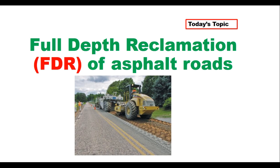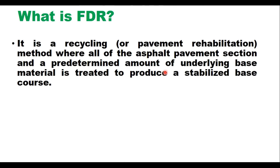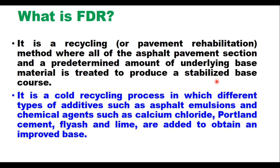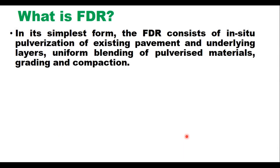FDR is a recycling or pavement rehabilitation method where all of the asphalt pavement section and a predetermined amount of underlying base material like WBM, WMM, or GSB is treated to produce a stabilized base course. It is a cold recycling process in which different types of additives such as asphalt emulsion and chemical agents such as calcium chloride, Portland cement, fly ash, and lime are added to obtain an improved base. In its simplest form, FDR consists of in-situ pulverization of existing pavement and underlying layers, uniform blending of pulverized materials.